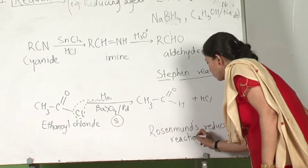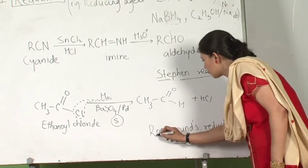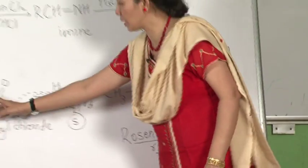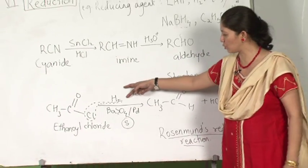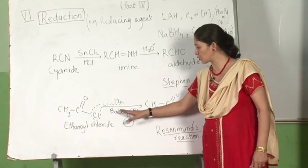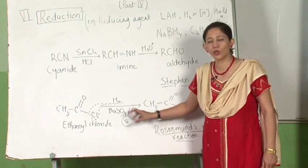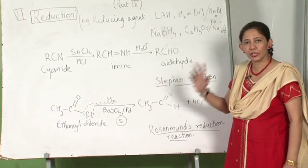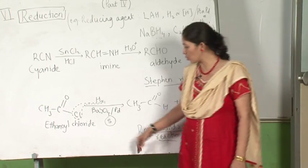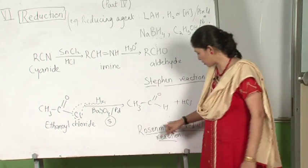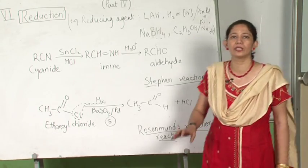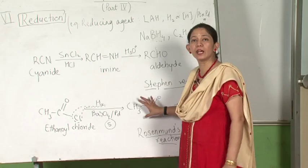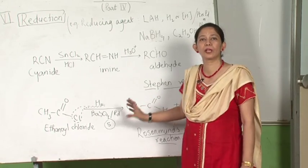All naming reactions are very important. Two of them are going to be asked in the examination. An acid chloride reacts with hydrogen in the presence of BaSO₄, palladium, and a small amount of sulphur to give the corresponding aldehyde. If asked what is the role of sulphur in Rosenmund's reduction, you must write that sulphur does not allow the aldehyde to be further reduced to the primary alcohol.